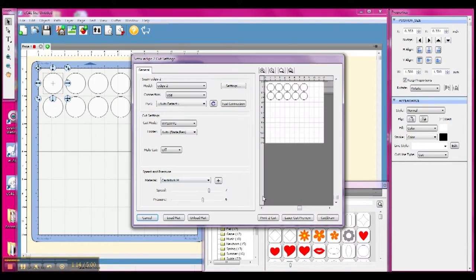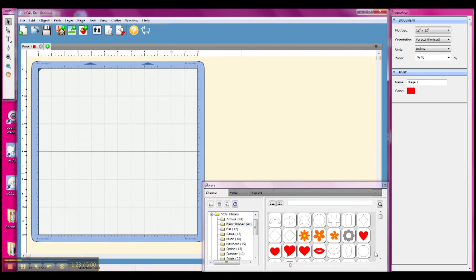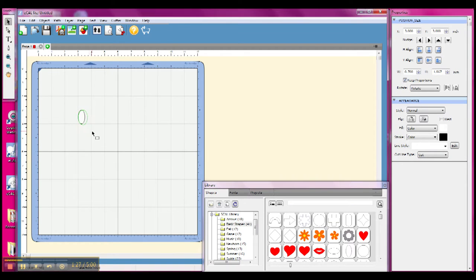I just made some circles. I measured the bottom of the cup and it was about one and a half inches wide, so I used the duplicate feature here to make a bunch of circles and then cut them out with the Sizzix Eclipse 2.